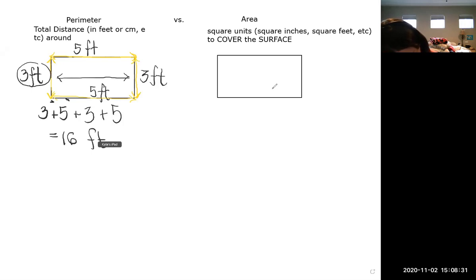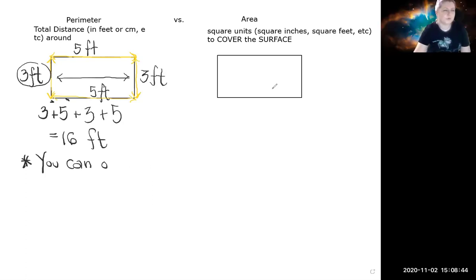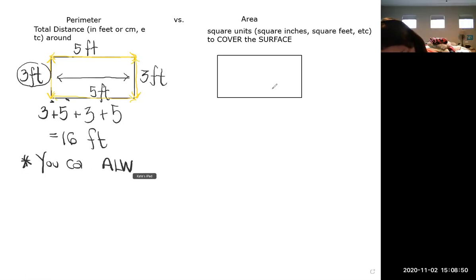And this is the super duper important part to make it into your notes. You can always find perimeter by adding up all the sides. Now, sometimes there's other ways to go as well, but this always works. So perimeter is always adding. You always can find it that way. It's not the only way to do it with every shape, but it will always work. You can always find the perimeter by adding all the sides because you're just taking a walk around the outside.